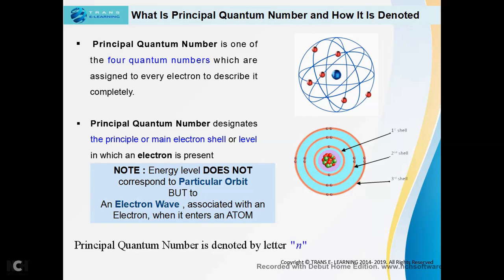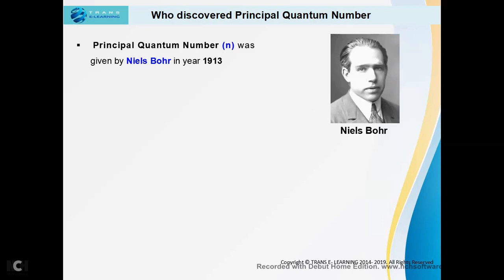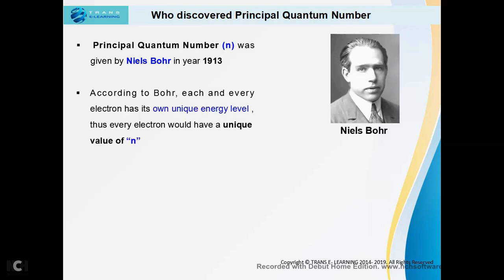The principal quantum number is denoted by n. Principal quantum number was given by Niels Bohr in 1913. According to Bohr, each and every electron has its own unique energy level. Thus every electron would have a unique value of n, and this corresponds to the particle behavior of an electron.